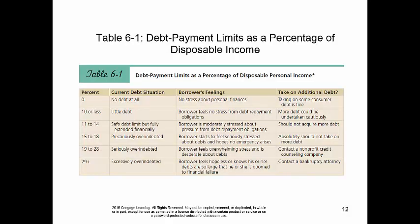The next chart, 6-1, shows the debt payment limits as a percentage of disposable income. Obviously, zero is no debt at all. 10% or less is little debt. 11-14% is safe but you're fully extended, and when you get up to 11-14%, you're starting to feel stress.